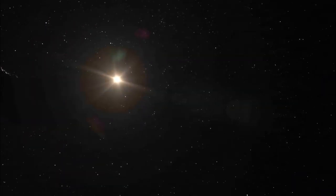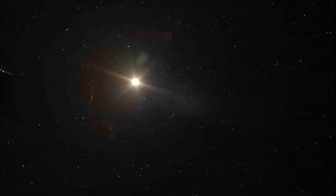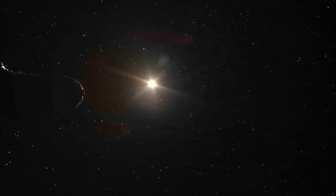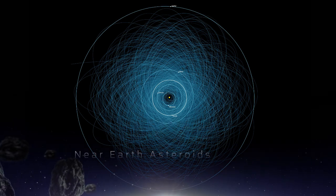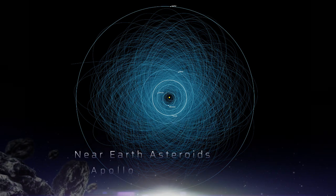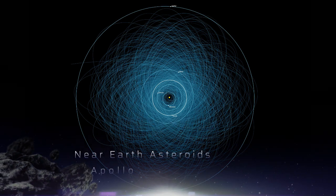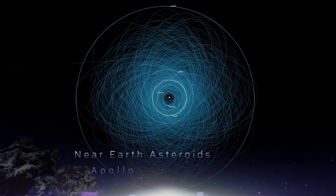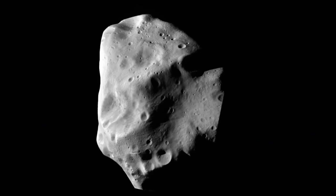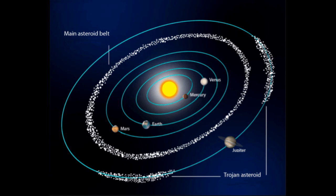Most are in the asteroid belt between Mars and Jupiter. However, we do get near-Earth asteroids, or Apollo asteroids, which are this side of Mars and across the orbit of the Earth, and we have Trojan asteroids which are orbiting outside the orbit of Jupiter in the deep solar system.